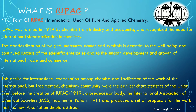This desire for international cooperation among chemists and facilitation of the work of the international but fragmented chemistry community were the earliest characteristics of the union. Even before the creation of IUPAC in 1919, a predecessor body, the International Association of Chemical Societies (IACS), had met in Paris in 1911 and produced a set of proposals for the work the new association should address.